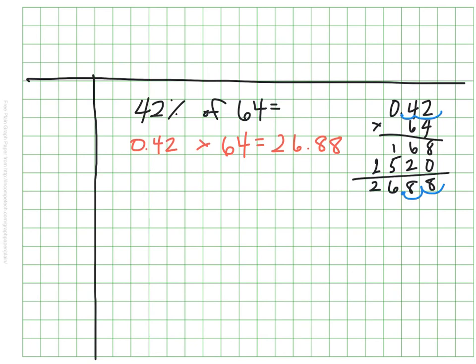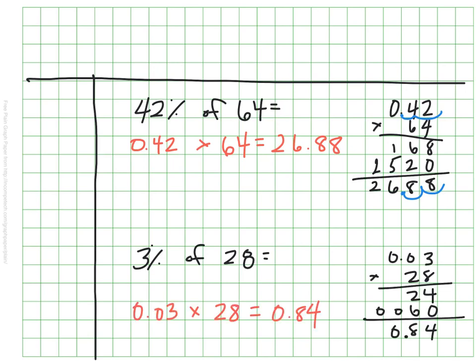Let's do one last practice. Let's find 3% of 28. This time I won't set it up for you — go ahead and set this up and see how you do. Hopefully you were mindful that this is 3%, so it's three hundredths, not three tenths. Hopefully you had that in the right spot, so you were able to get an answer of 84 hundredths.